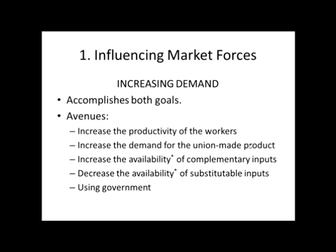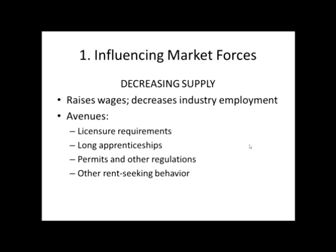We can also use government by requiring that things be done by union labor rather than non-union labor. When it comes to decreasing supply, we have to be careful whether we're talking about supply in the whole industry or supply of union labor — we're probably talking about supply in the entire industry. This will raise wages but decrease industry employment. One of the ways you can do this is through licensure requirements. Lawyers have far fewer competitors because of licensure requirements, and so their wages are higher.